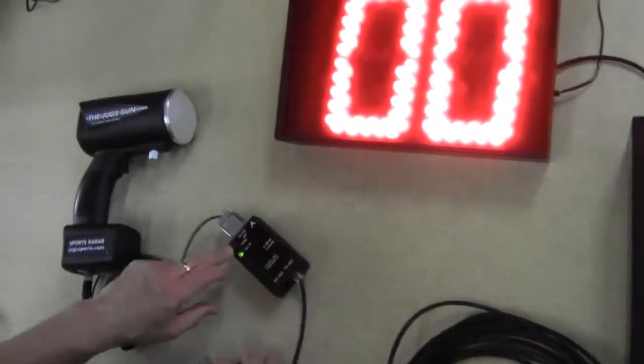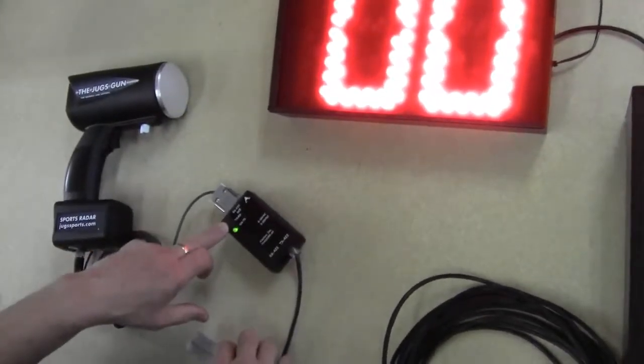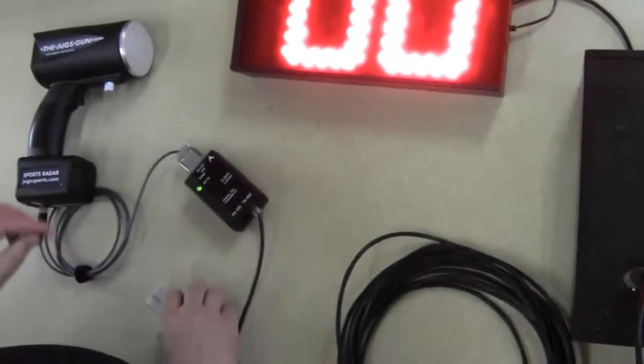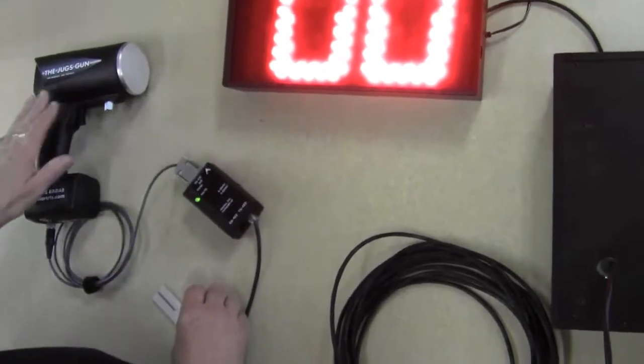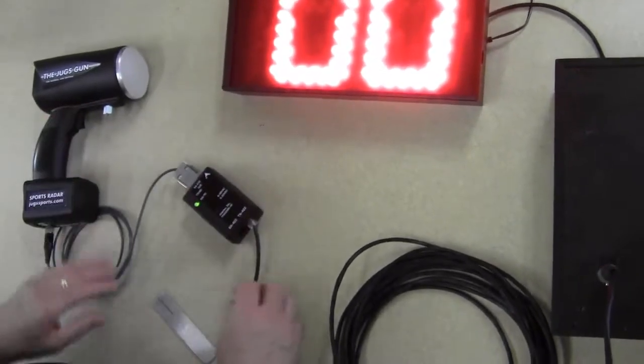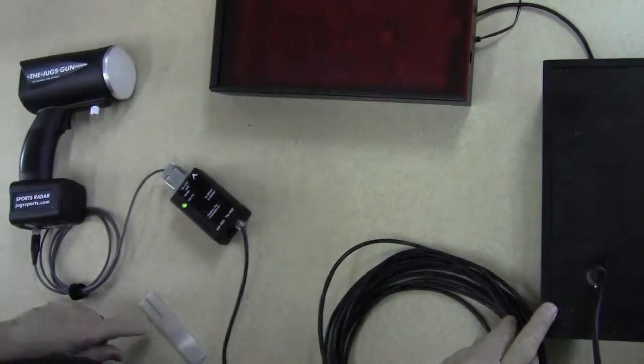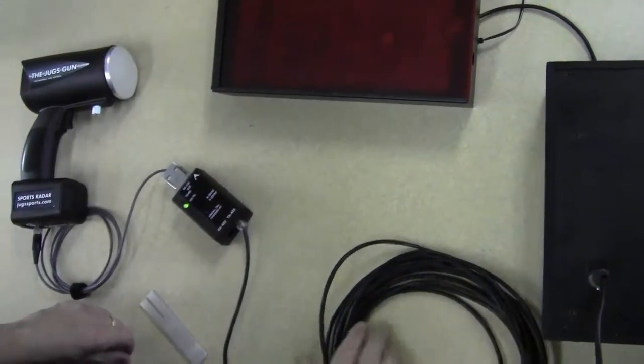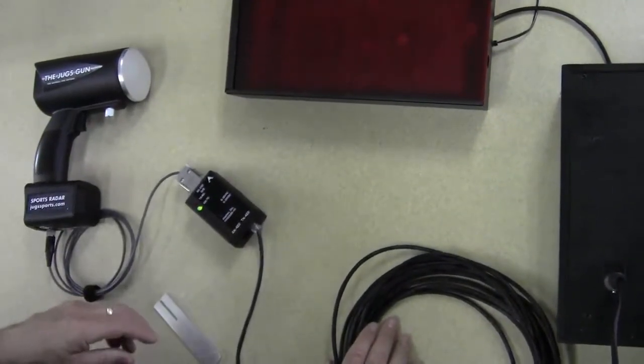So the real key here is that this is going to be transmitted data. Now the only issue you might run into is baud rate. The baud rate on this is 1200. The baud rate on the OAS display should be 1200, but it could be 9600. Now some radar guns also have 9600 baud rates.